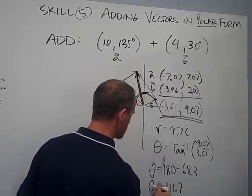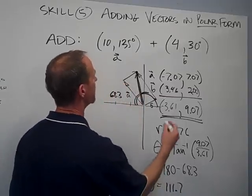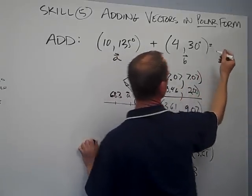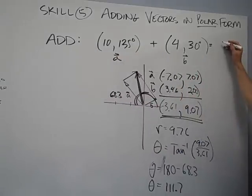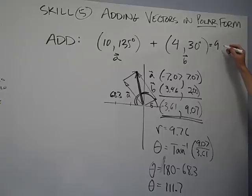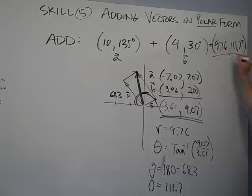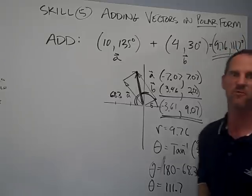So the final answer is 9.76 at 111.7 degrees. There we go — adding vectors in polar form.